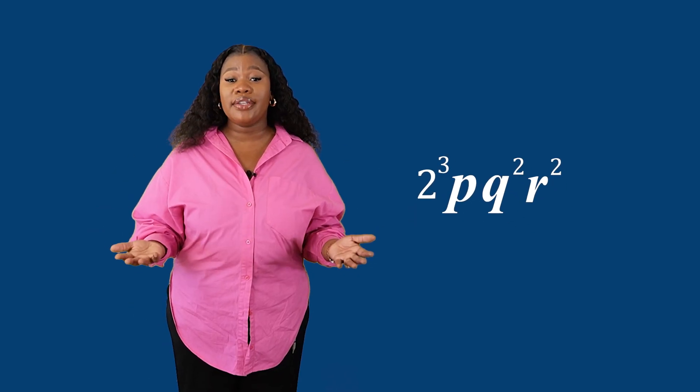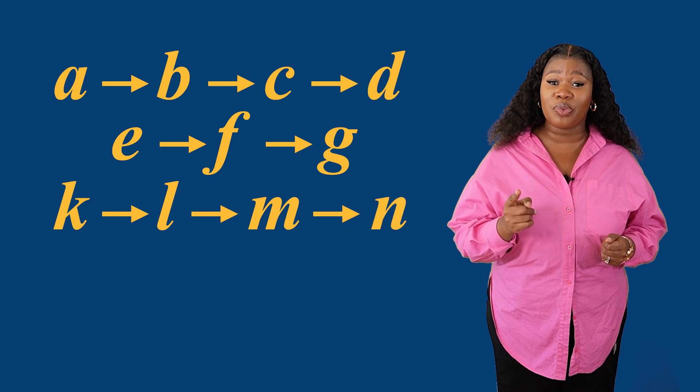A reminder, grade nines, the number comes first, then the variables in alphabetical order. P, then q, then r. Remember grade nines, alphabetical order in algebra is important.